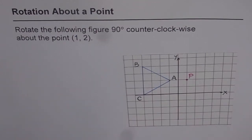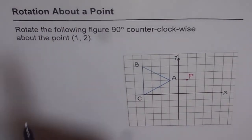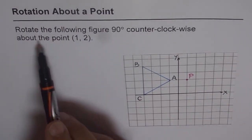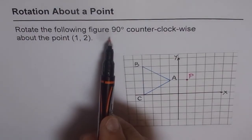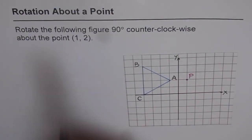Let us now learn about a great concept with a very simple example. We will do rotation about a point — not the origin, but any point on the coordinate plane. That is the topic for this video: rotation about a point. Rotate the following figure 90 degrees counterclockwise about the point (1, 2).